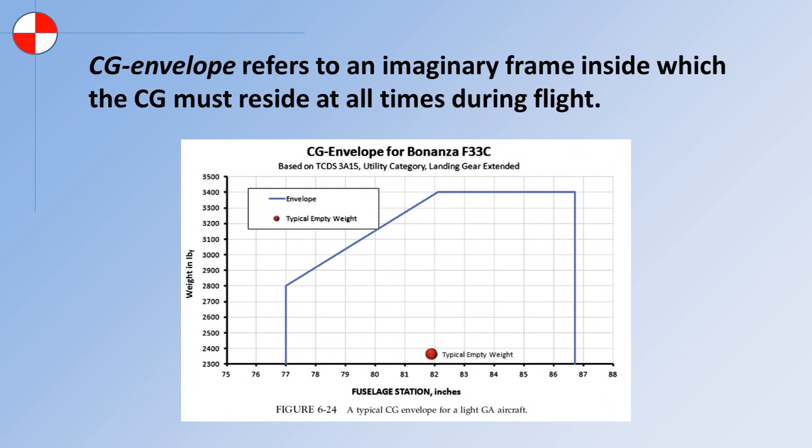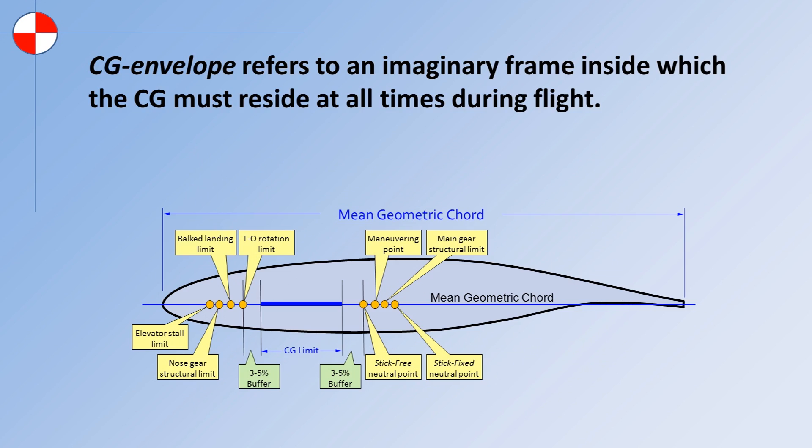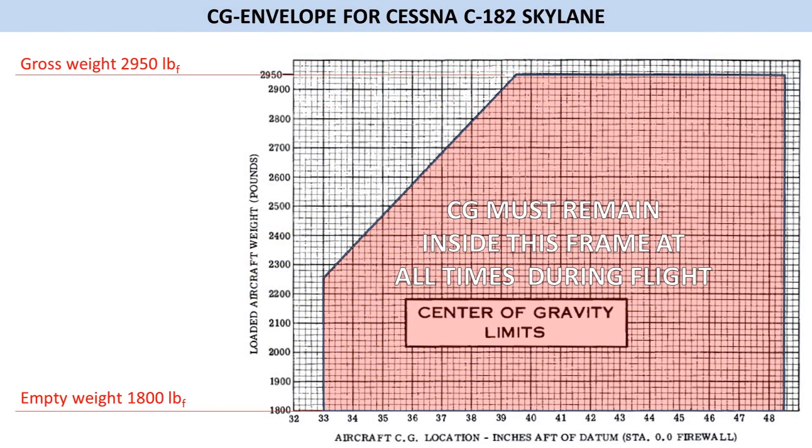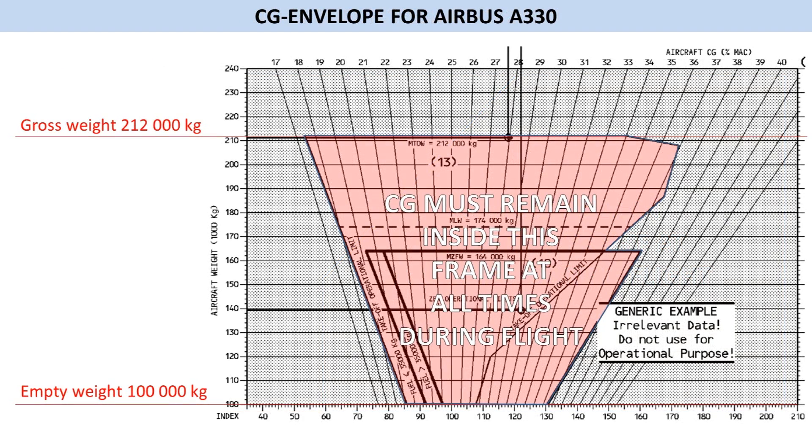Next, let's define a few concepts that involve the position of the CG. The term CG envelope refers to an imaginary frame inside which the CG must reside at all times during flight. As an example, here is the CG envelope for the Cessna 182. And here, for the Airbus 330.